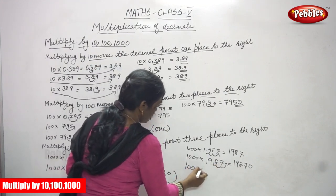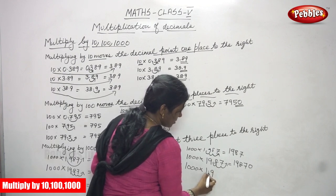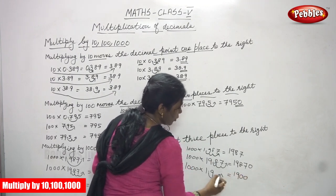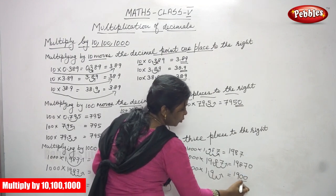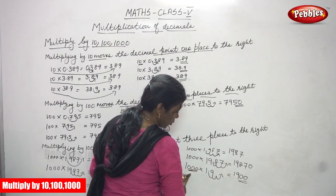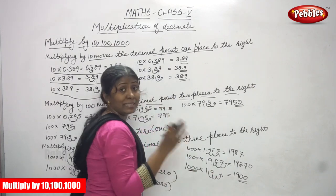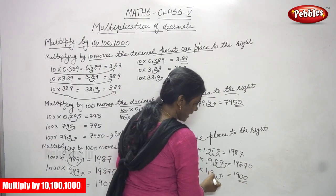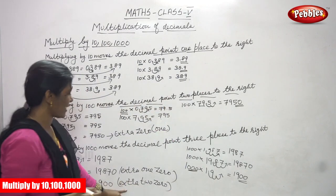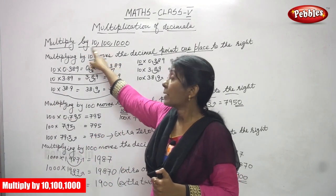Next, 1000 into 1.9. This point moves again 3 places — first place, second place, then third place. In the second and third places, there is no number. So you have to add 2 extra zeros. Because in 1000 there are 3 zeros, we move 3 places to the right. The answer is 1,900. And that's all the rules for multiplying by 10, 100, and 1000.